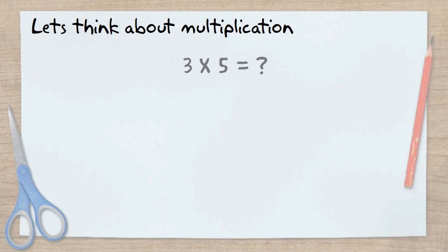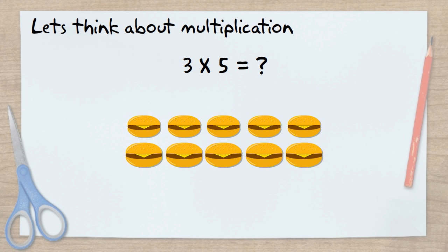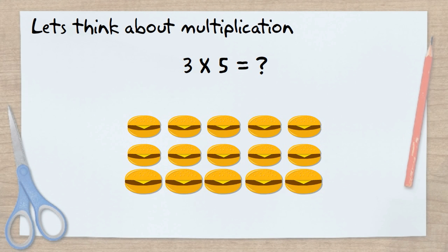First, let's think about multiplication. 3 times 5. We know that when we have the factors 3 and 5, it is the same as having 3 rows of 5, or 15.